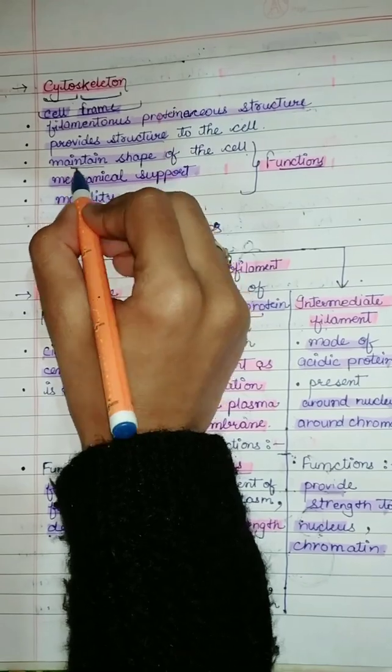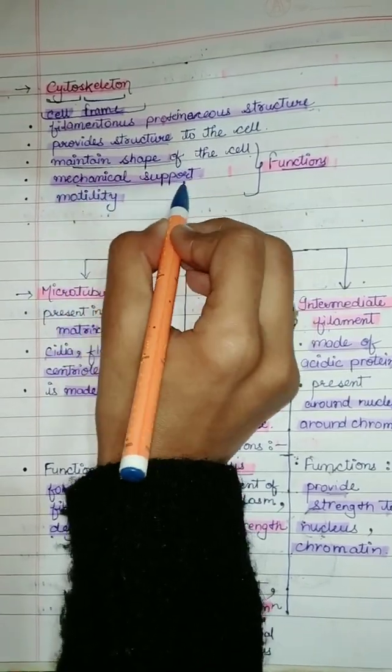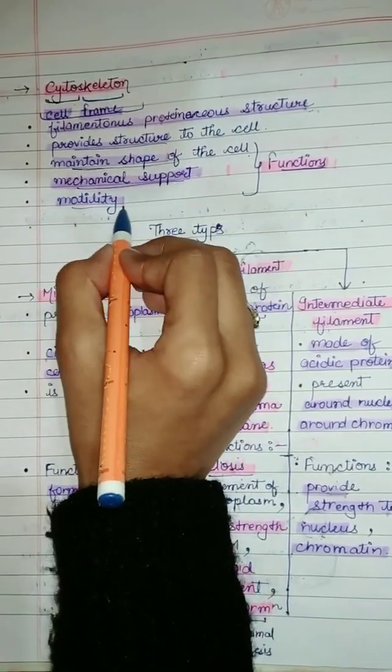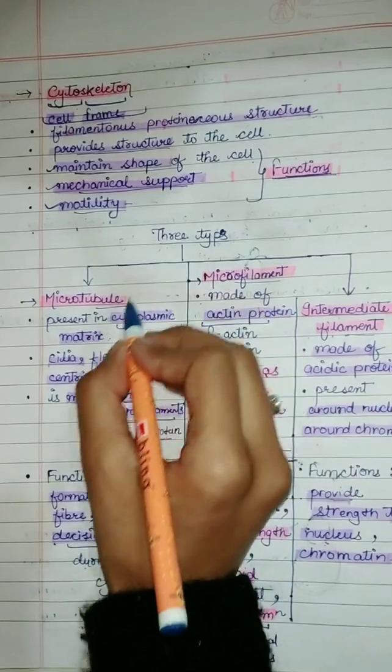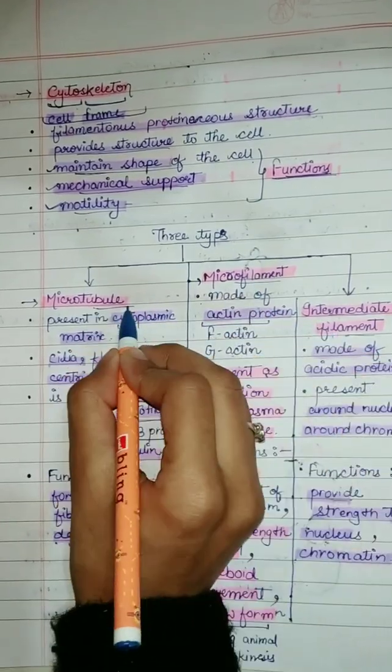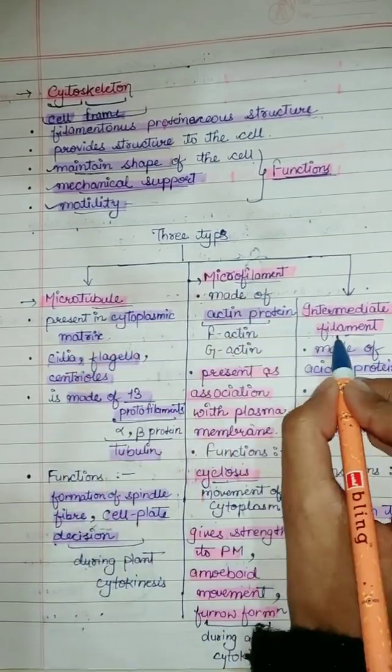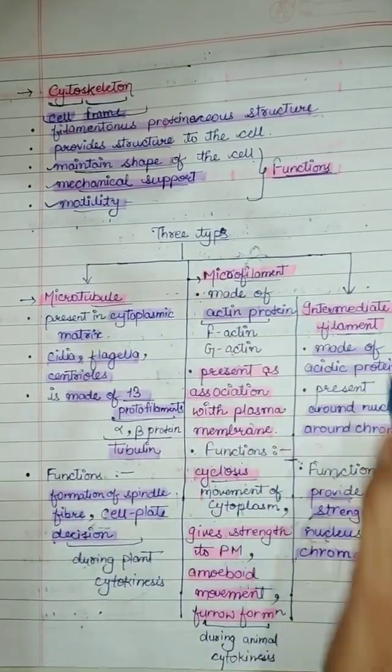Cytoskeleton maintains the shape of the cell. It gives mechanical support to the cell and helps in motility, meaning movement. Cytoskeleton has three types: microtubule, microfilament, and intermediate filament.